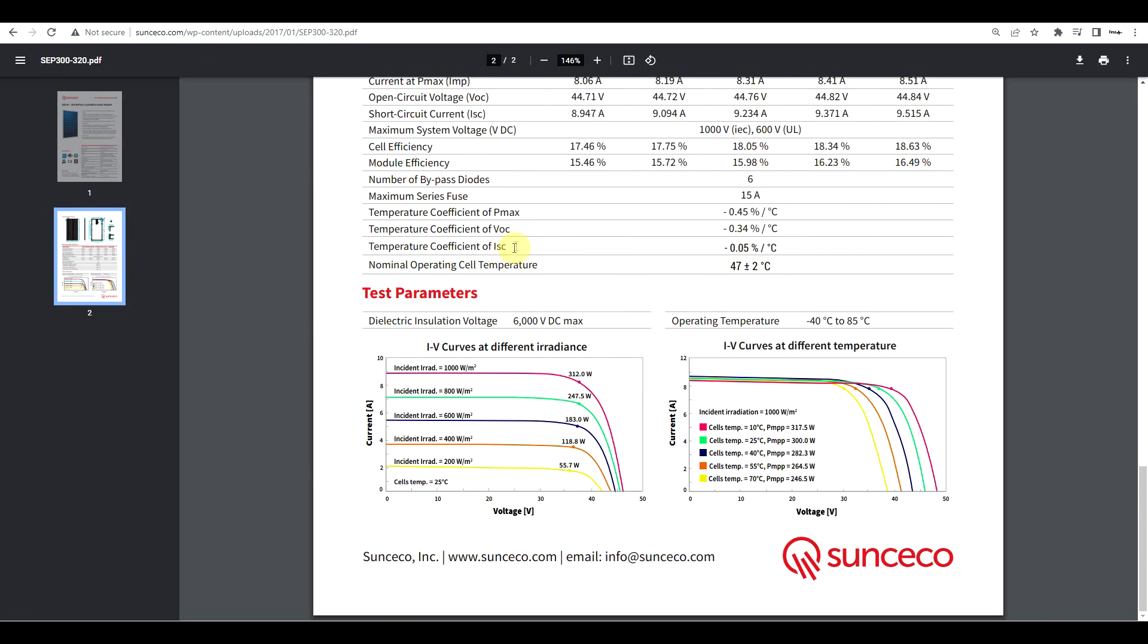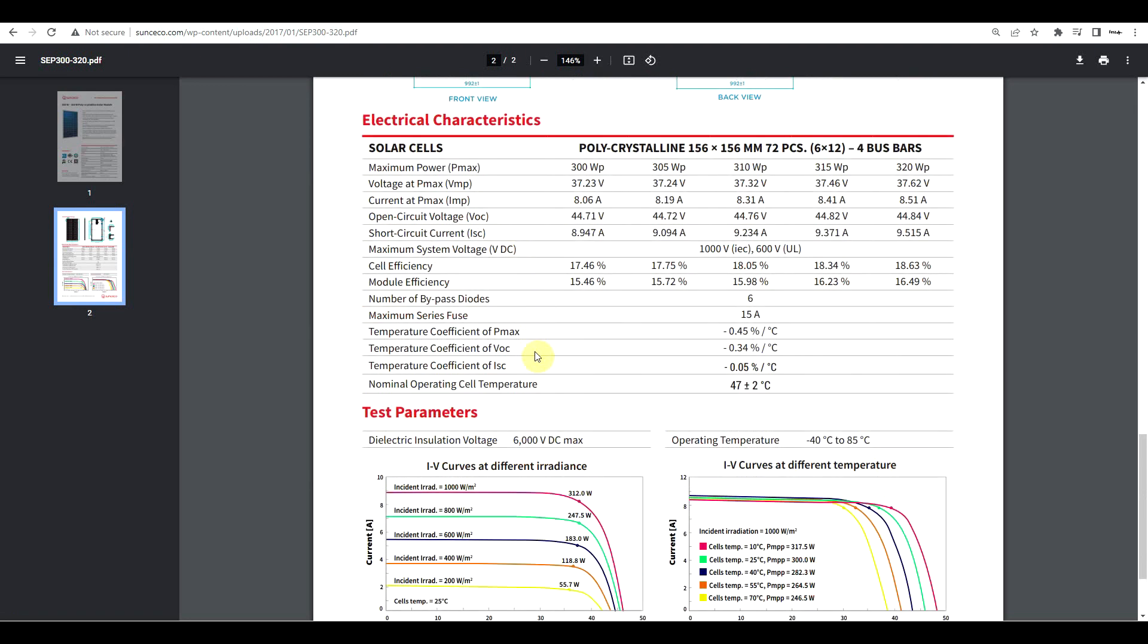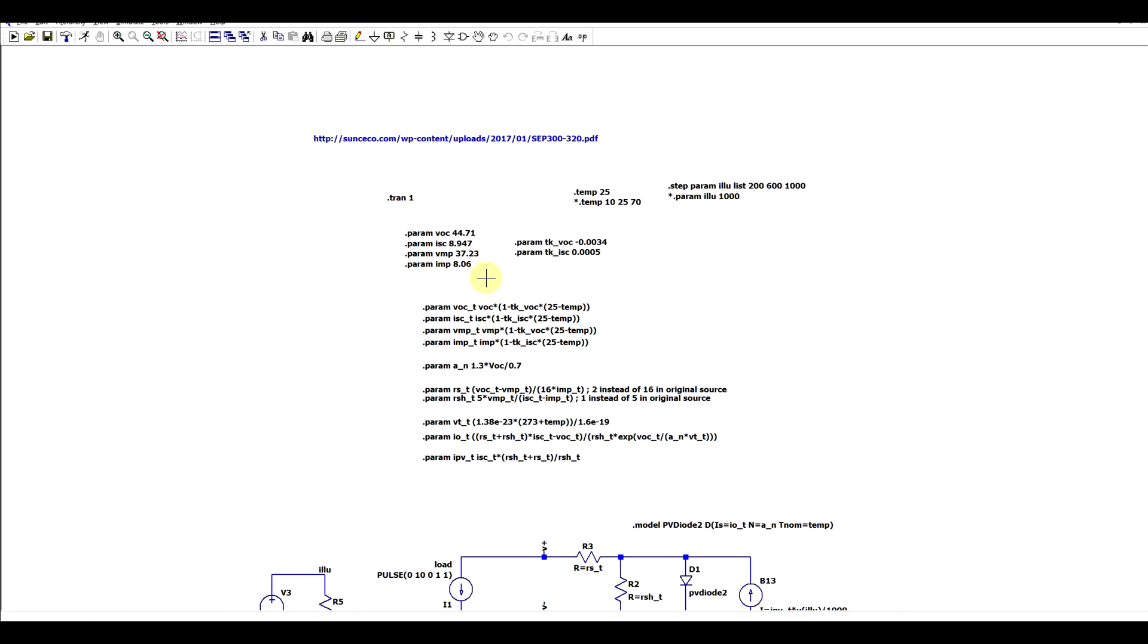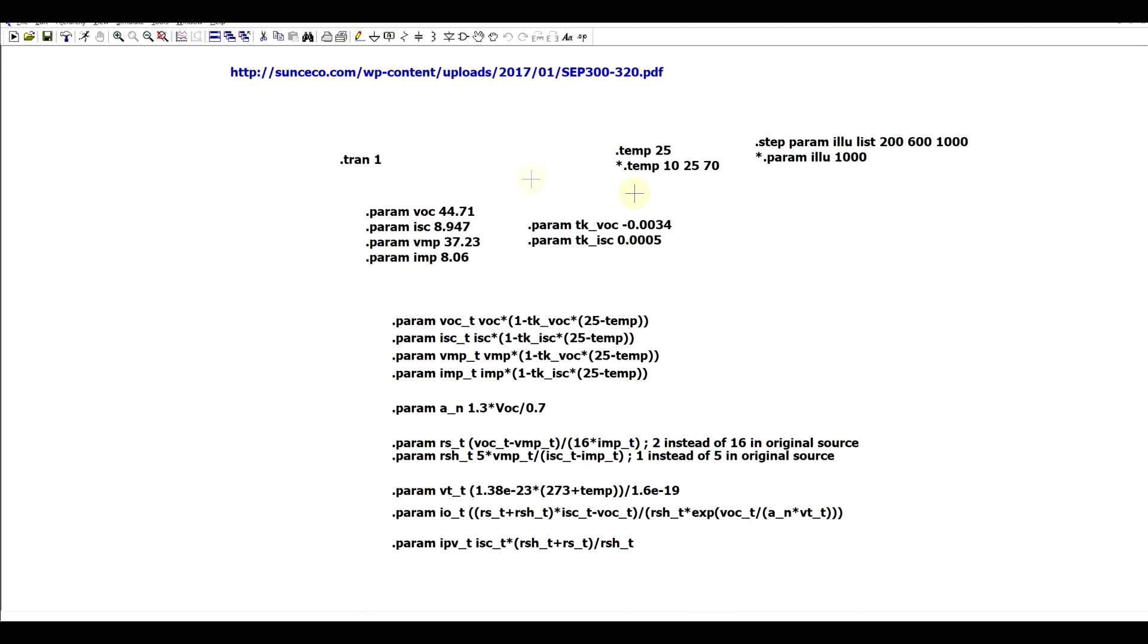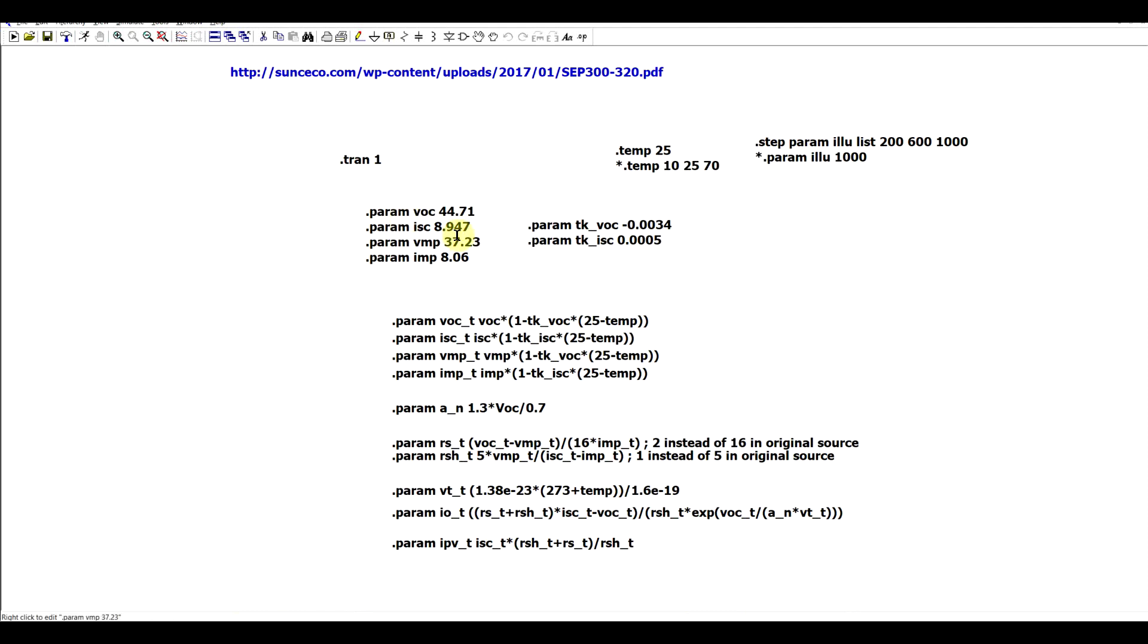Now I would just like to mention that in this datasheet the short circuit current coefficient is a negative 0.05 percent even though normally this is a positive value. This is probably related to the fact that this coefficient is defined over a specific temperature interval. But anyway I will keep this as a positive value. Now if we turn to the simulation I already included the various parameter values as parameter statements and then the various calculations that only need to be performed a single time during the simulation I've included them in dot parameter statements.